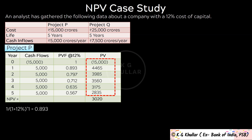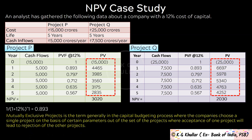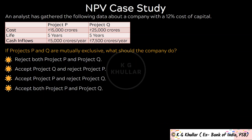Mutually exclusive projects means the company chooses a single project where acceptance of one leads to rejection of the others. So you have to select any one project. For mutually exclusive projects, accept the project with the highest positive NPV. NPV for project P is 3,020 crores, which is higher than NPV for project Q at 2,030 crores. Therefore we accept project P and reject Q. The correct answer is option C.